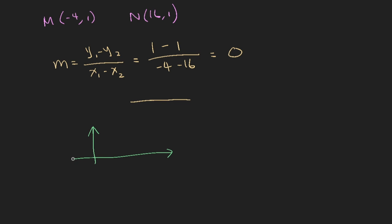Another example. So points m minus 4, 1, and point n, 16, 1, find the gradient. So the formula, if you were to apply, will be y1 minus y2 over x1 minus x2. So this is equals to 1 minus 1 over minus 4 minus 16, which will give you 0. So this, you know, is a horizontal line. The gradient is 0. If we were to plot it on a graph, let's sketch this. So you have minus 4, 1 here. And then you have 16, 1, maybe somewhere here. And we are right. It's a horizontal line.